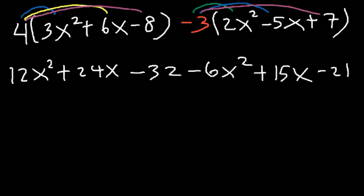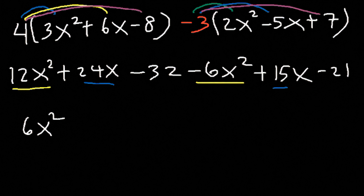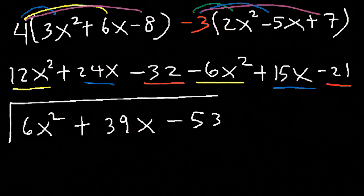So now let's combine like terms. 12 minus 6 is positive 6. 24 plus 15 gives the x coefficient.